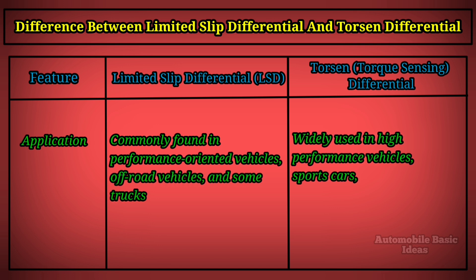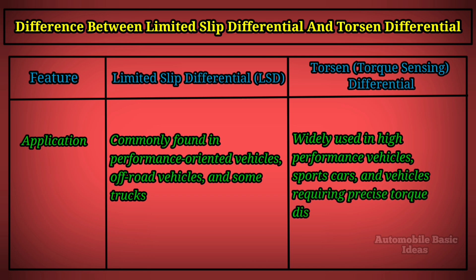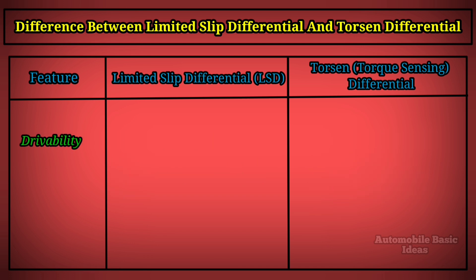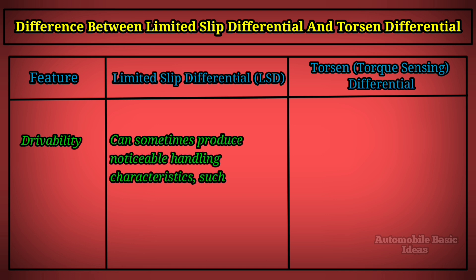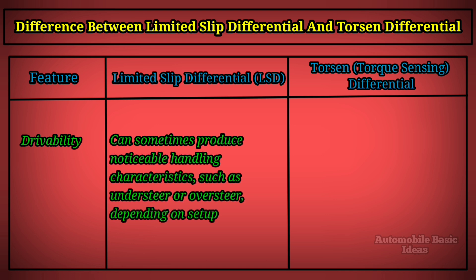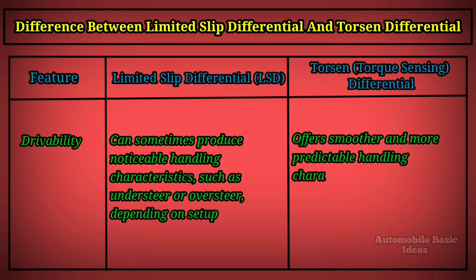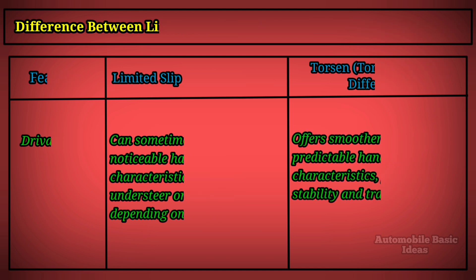In terms of application, LSDs are commonly found in performance-oriented vehicles, off-road vehicles, and some trucks, while torsen differentials are widely used in high-performance vehicles, sports cars, and vehicles requiring precise torque distribution. For drivability, LSDs can sometimes produce noticeable handling characteristics such as understeer or oversteer depending on setup, whereas torsen differentials offer smoother and more predictable handling characteristics, promoting stability and traction.